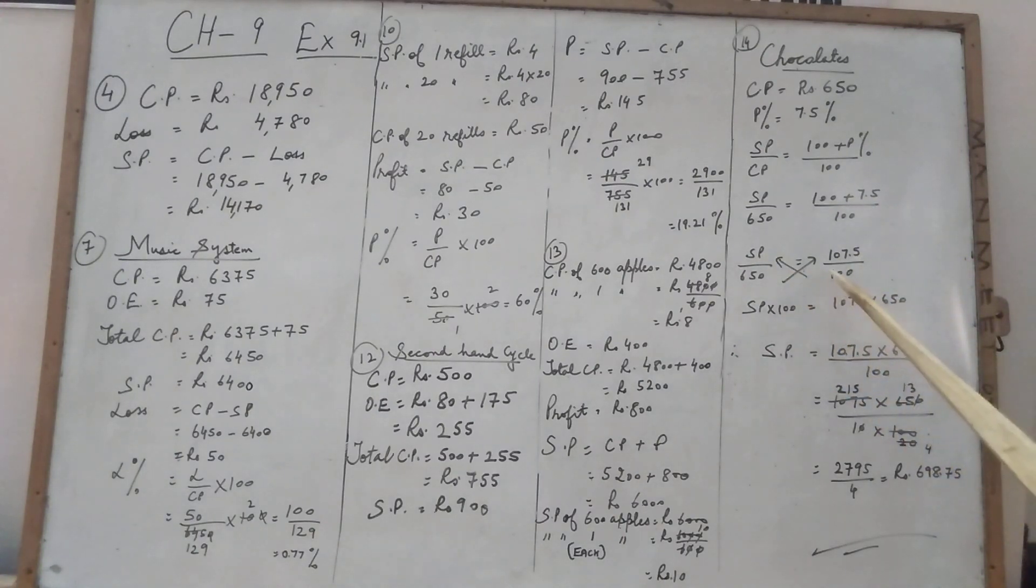Now children, we will cross multiply. 100 will go to this numerator. 650 will go to this numerator in the right hand side. Now because here is decimal, children, I will remove the decimal. After removing decimal, there is one digit behind the decimal. So I will put 10. Do the cutting. Now here cutting is not possible at the last step. So we will divide these two. And we got the answer Rs. 698.75.